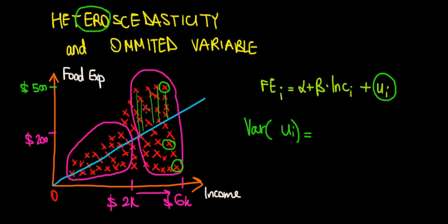These are our error terms, and the variation is the error terms squared, summed up. This becomes larger when income increases, so it's a function of income.